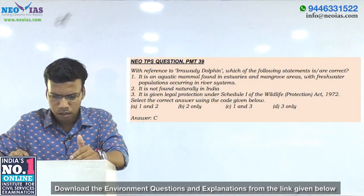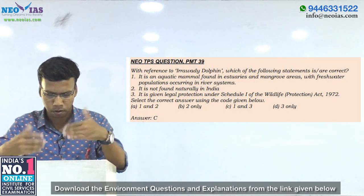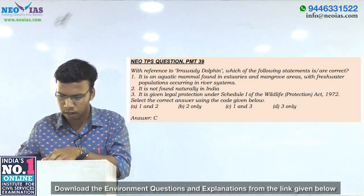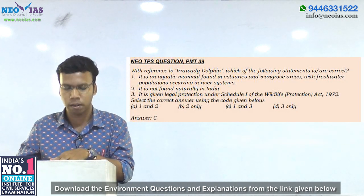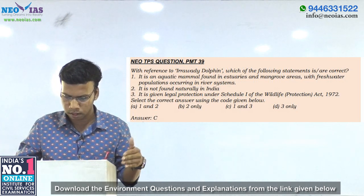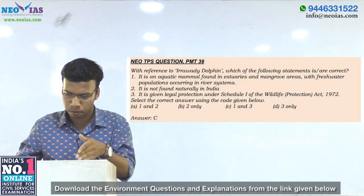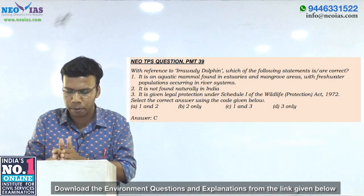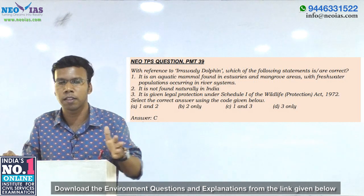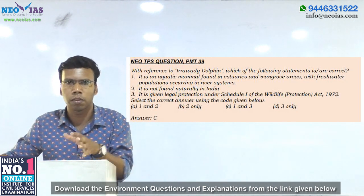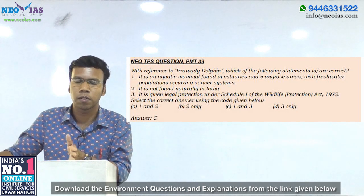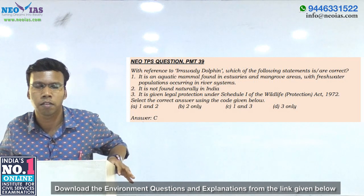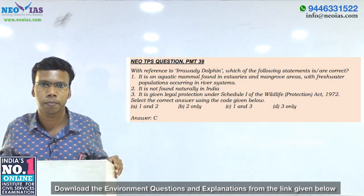We also made a question regarding the Irrawaddy dolphin, where we stated it is an aquatic mammal found in estuaries and mangrove areas with freshwater populations occurring in river systems. The second statement in that question was that it is not found naturally in India — which is wrong. The answer for that model question was C — 1 and 3. Within that explanation, we said the Irrawaddy dolphin is found in Chilika lake in India and also in some rivers, thereby confirming that it is not found in the Chambal river.